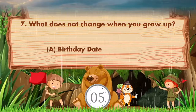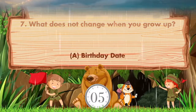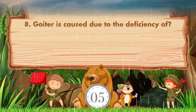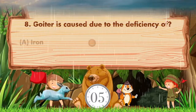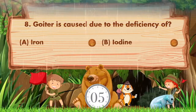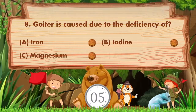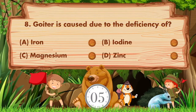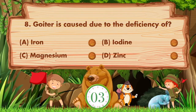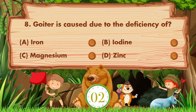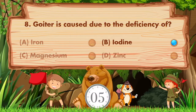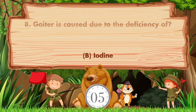What does not change when you grow up? Option A: birthday date, B: height, C: weight, D: age. Answer is option A, birthday date. Goiter is caused due to the deficiency of which element? Option A: iron, B: iodine, C: magnesium, D: zinc. Answer is option B, iodine.